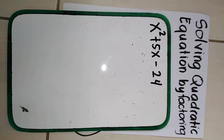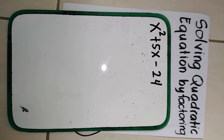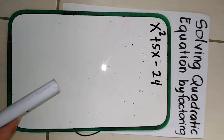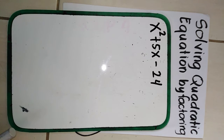Our first step is to focus on c. Find the factors of c — we find the factors of c whose sum is equal to the linear term. What is the numerical coefficient of our linear term? It's 5. So let's find the factors of negative 24 whose sum is equal to 5.